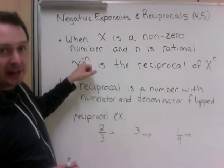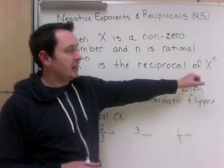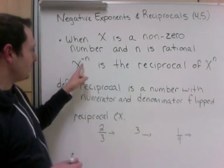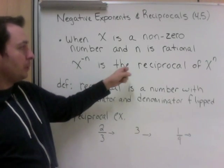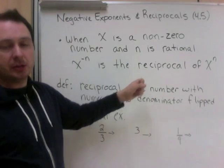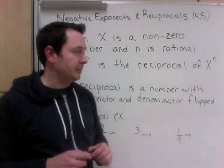Then x to the negative n is the reciprocal of x to the n. So the only difference here is a negative, and here it's positive. But it will be the reciprocal of each other. So maybe we need to take a look at what reciprocal means first.